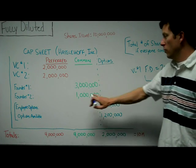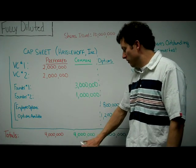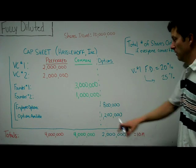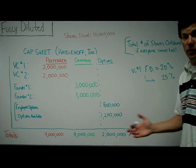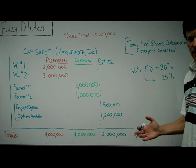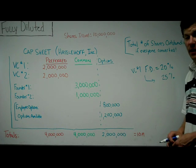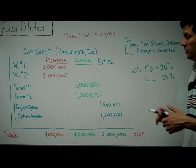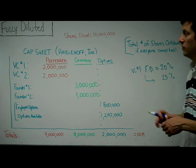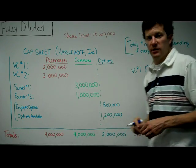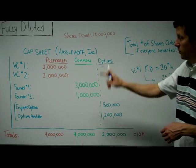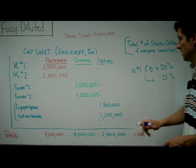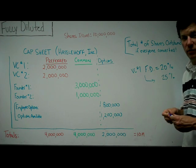For the founders, they own 4 million shares combined — that's 50 percent if the options don't exercise, but only 40 percent if they do. That can be a big chunk of money and an important difference when figuring out your own ownership percentages or those of your investors. Generally, you want to think in terms of fully diluted shares outstanding — meaning what percentage do you own if all convertible instruments convert to common stock. That's essentially what fully diluted means.